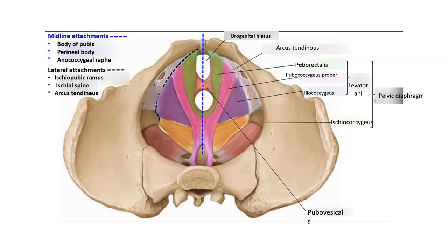Nearly 10 muscles are attached to the perineum. There is a structure known as the anococcygeal raphe, also called the post-anal plate, extending from the posterior margin of the anal opening towards the coccyx, into which the muscles of the pelvic diaphragm get attached. The lateral attachment of the pelvic diaphragm is to the ischiopubic ramus, the ischial spine, and the arcus tendineus, which is the fascia covering the obturator internus.